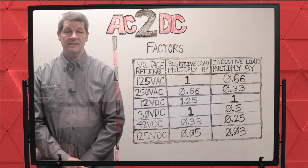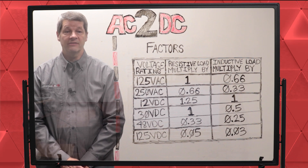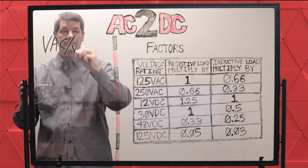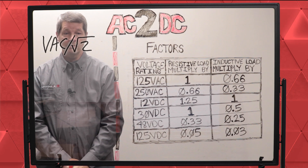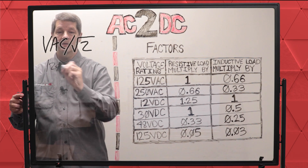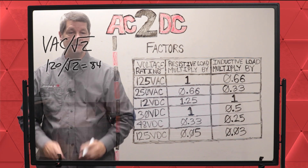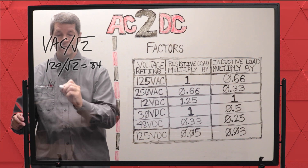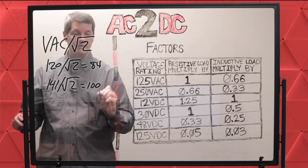If you're trying to find out the DC voltage of an AC power supply, use the formula VAC divided by the square root of 2. So essentially divide the AC voltage by the square root of 2 to find the DC voltage. For example, if the AC power source is 120 volts, then your formula would be 120 divided by the square root of 2, which would yield approximately 84 volts DC. Another example would be an incandescent bulb with 141 VAC, which would yield roughly 100 VDC.